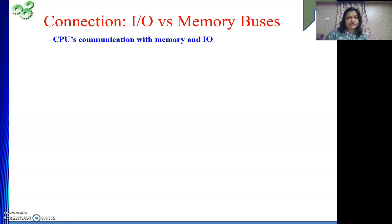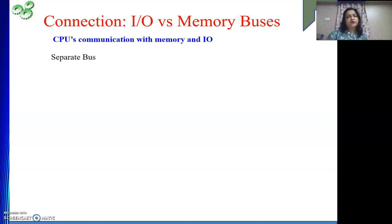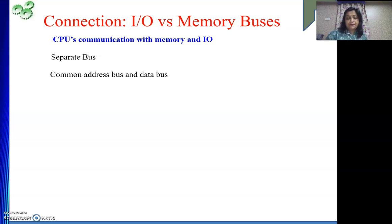Basically there are three types of connections. One is separate buses - a bus is a set of wires, and to connect one component to the CPU we have three sets of wires: one is the address bus, one is the data bus, and another is the control bus. Second one is common address bus and data bus, but the control bus is separate for each. The third one is all common - address bus, data bus as well as control bus.